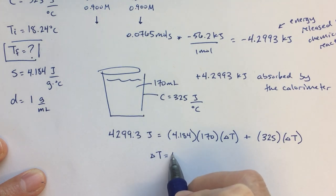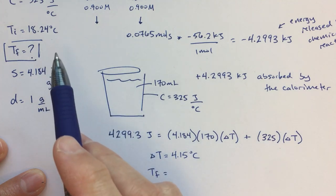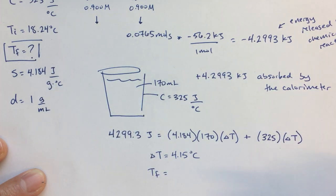And I get a value of 4.15. And then to find my T final, I'm just going to add 4.15 to my T initial. So T final should be T initial plus however much the temperature goes up. And that is 22.39 degrees Celsius.